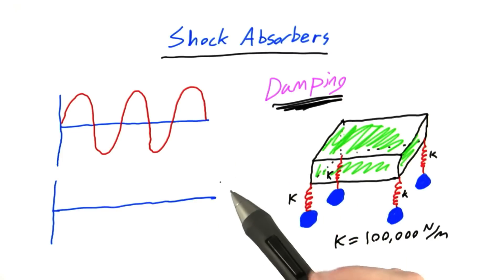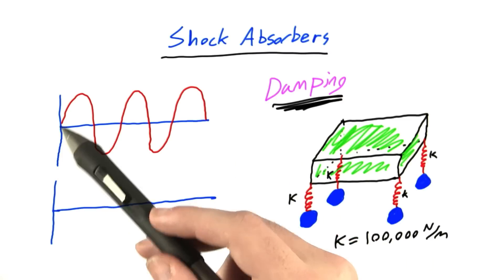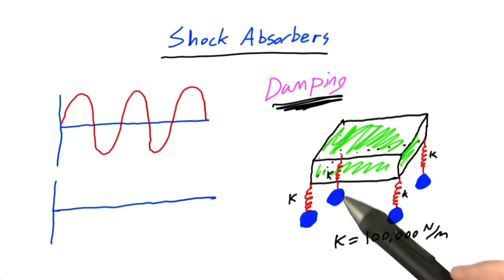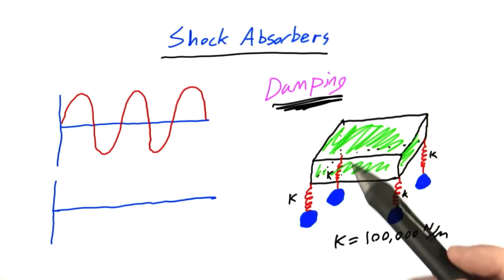So far when we've been talking about simple harmonic motion, we've been assuming that the motion just continues forever in this nice sinusoidal pattern. In real life, however, we have to deal with things like friction and losses to heat when the springs move up and down.